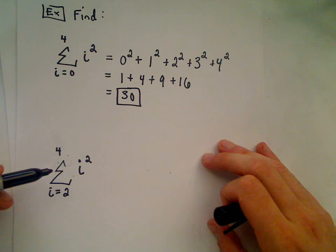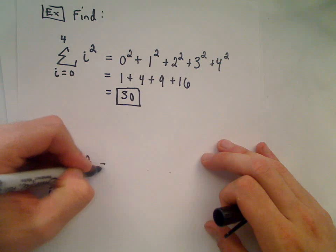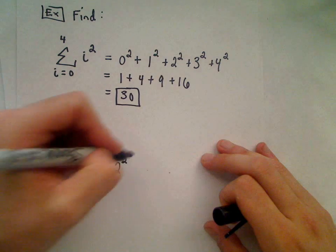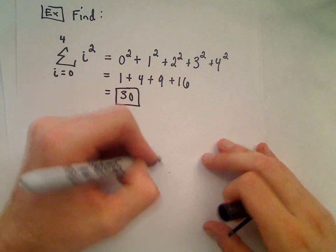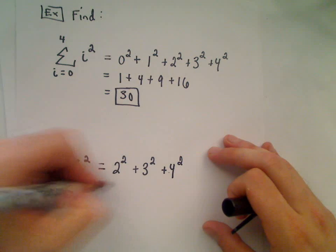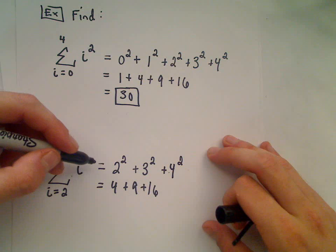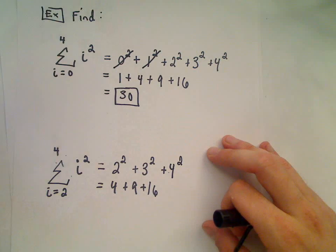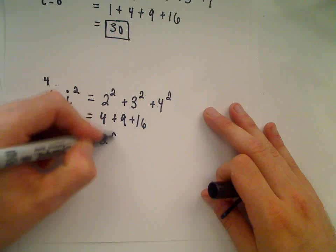Notice in my next example here, there's really nothing different except my index now starts at 2 instead of 0. All that means is the first number you plug in is 2. So I'll get 2 squared, then I plug in 3, 3 squared, then I plug in 4, 4 squared. So all this new sum represents is 4 plus 9 plus 16. Notice we're just leaving out the first two terms. So if you add those up, we'll be left with the value of 29.